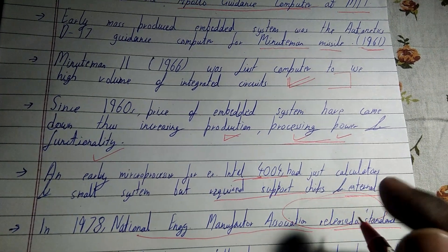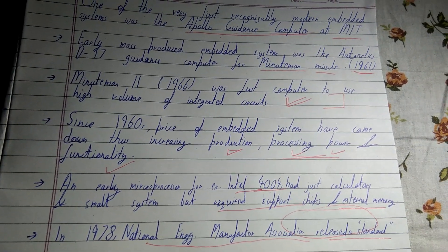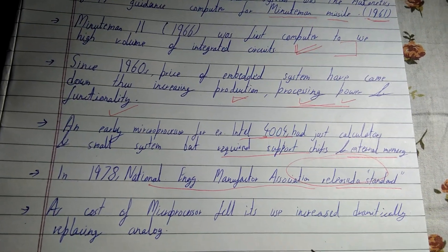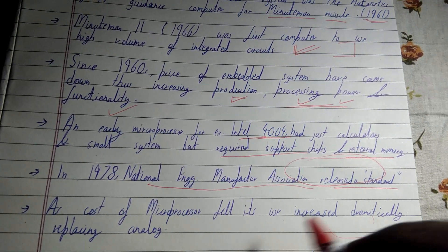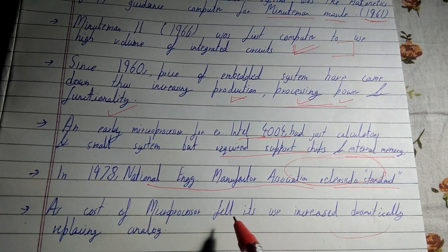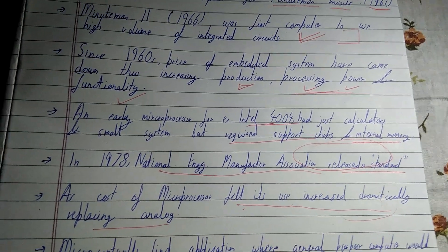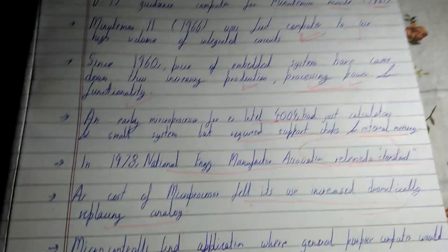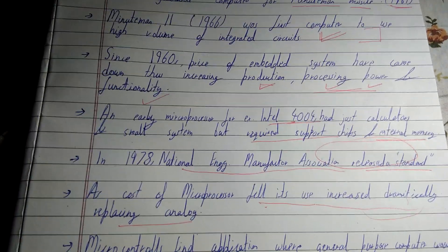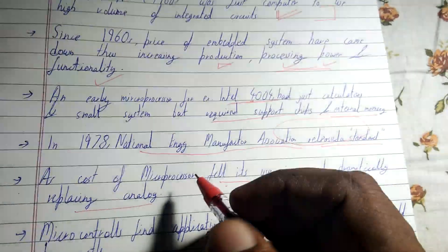In 1978, the National Electrical Manufacturers Association released a standard requiring any company making embedded systems to follow those standards. This resulted in proper manufacturing of embedded systems. As the cost of microprocessors fell, production increased dramatically, replacing analog systems.